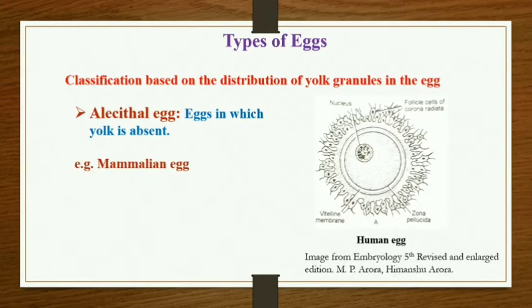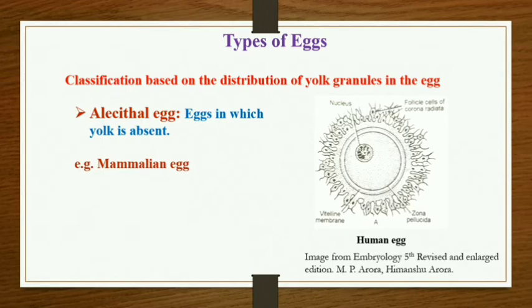The first one is the olecithal egg. The type of egg in which yolk is totally absent or a very minute amount of yolk is present — such eggs are referred to as olecithal eggs. The best example of an olecithal egg is the human egg. If you see in this particular diagram, you will not see any yolk present in the egg.